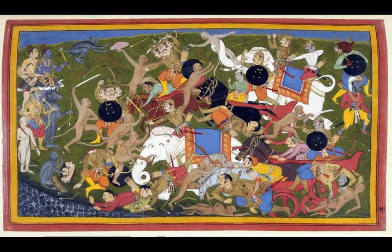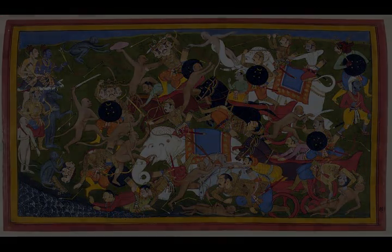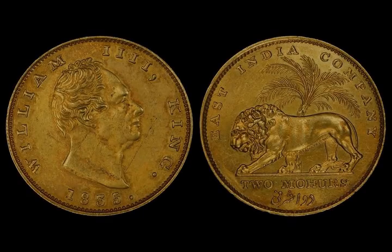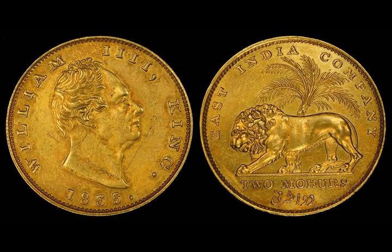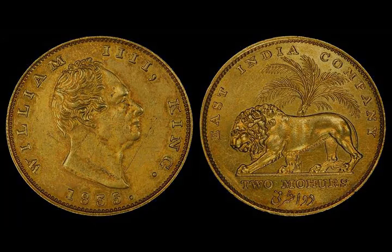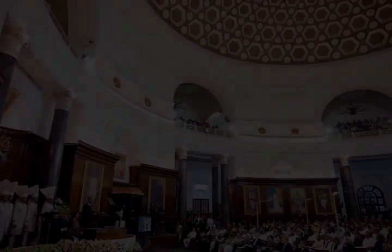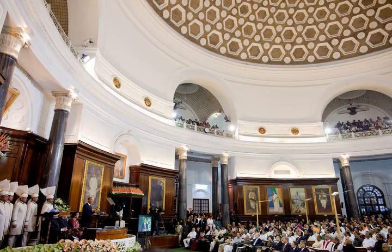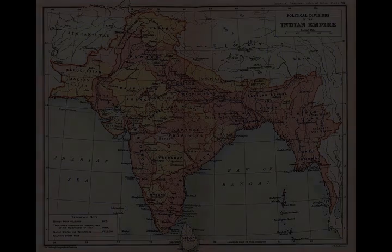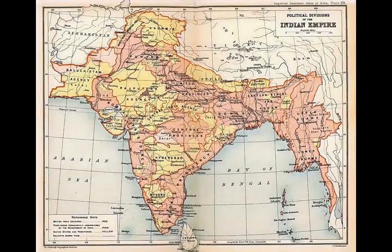According to the Indian Naval Hydrographic Charts, the mainland coastline consists of the following: 43% sandy beaches, 11% rocky shores including cliffs, and 46% mudflats or marshy shores. Major Himalayan-origin rivers that substantially flow through India include the Ganges and the Brahmaputra, both of which drain into the Bay of Bengal. Important tributaries of the Ganges include the Yamuna and the Kosi; the latter's extremely low gradient, caused by long-term silt deposition, leads to severe floods and course changes.